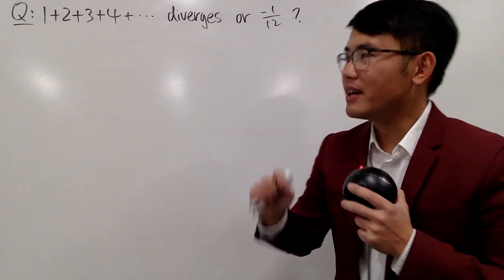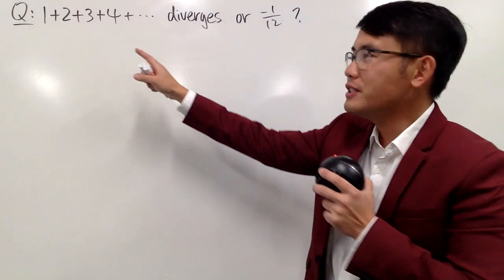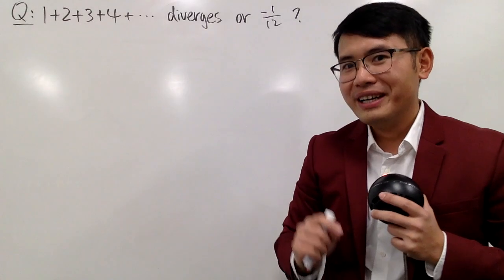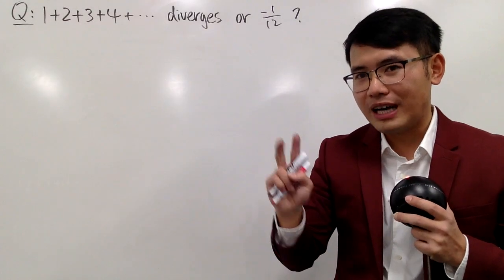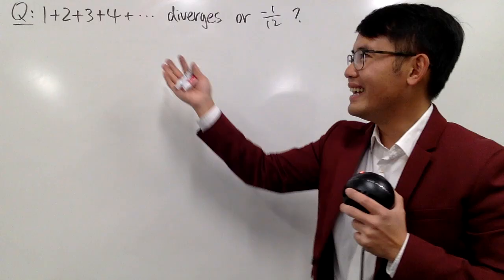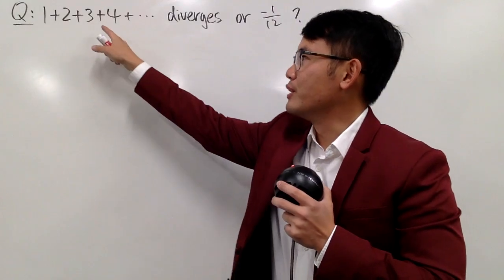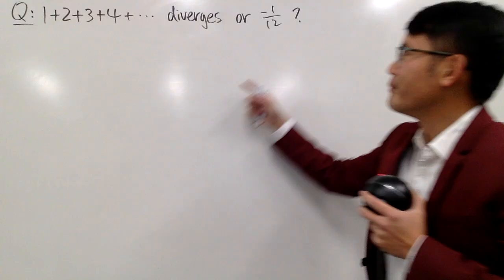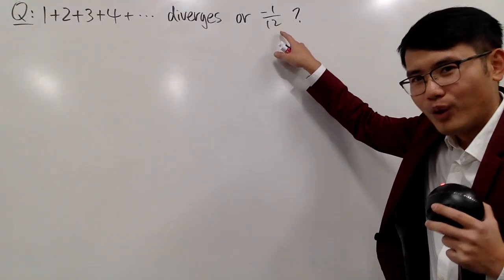In this video, let's talk about the sum of all the positive numbers, namely 1 plus 2 plus 3 plus 4 plus dot dot dot. This is a really famous debate because we have two popular ways to answer this. The first answer is that we can just say this diverges. And the second way is that it's equal to negative 1 over 12.